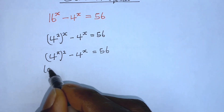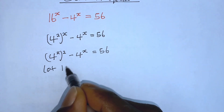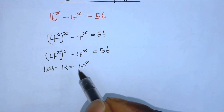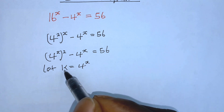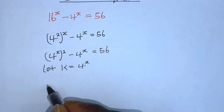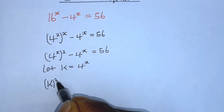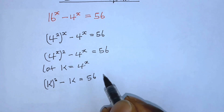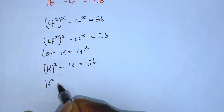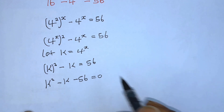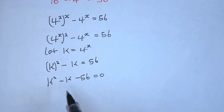From this step, let k be equal to 4 to the power of x. Therefore we can substitute 4 to the power of x with k anywhere we see it. So we get k squared minus k which is equal to 56, therefore k squared minus k minus 56 equals zero. We now have a quadratic equation to solve.